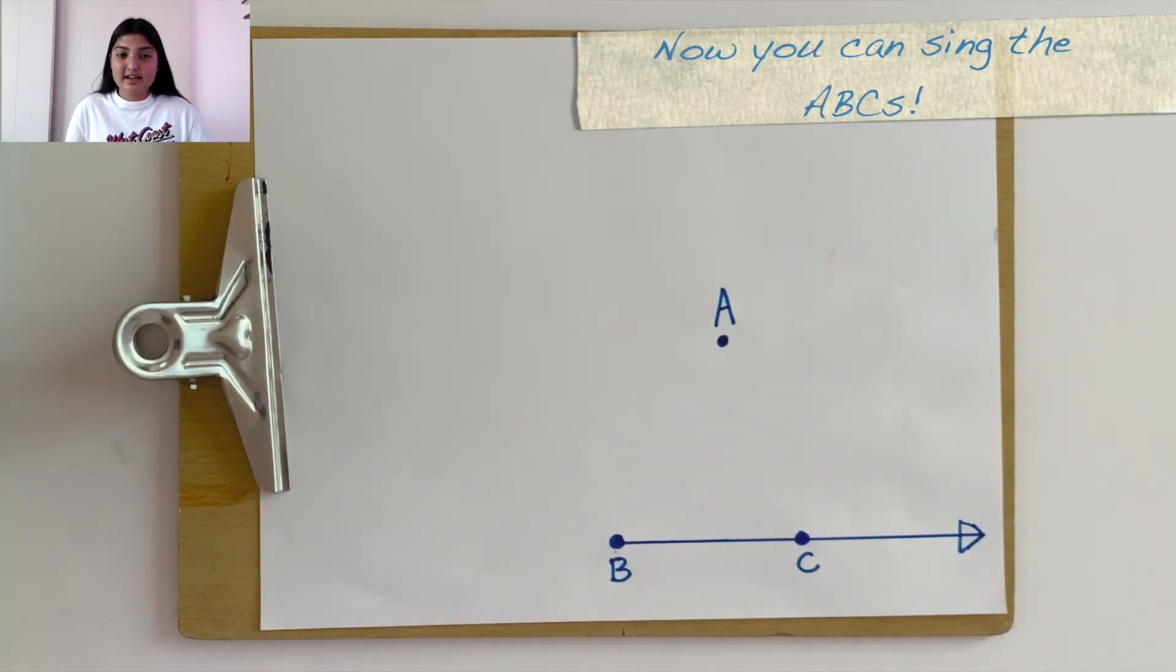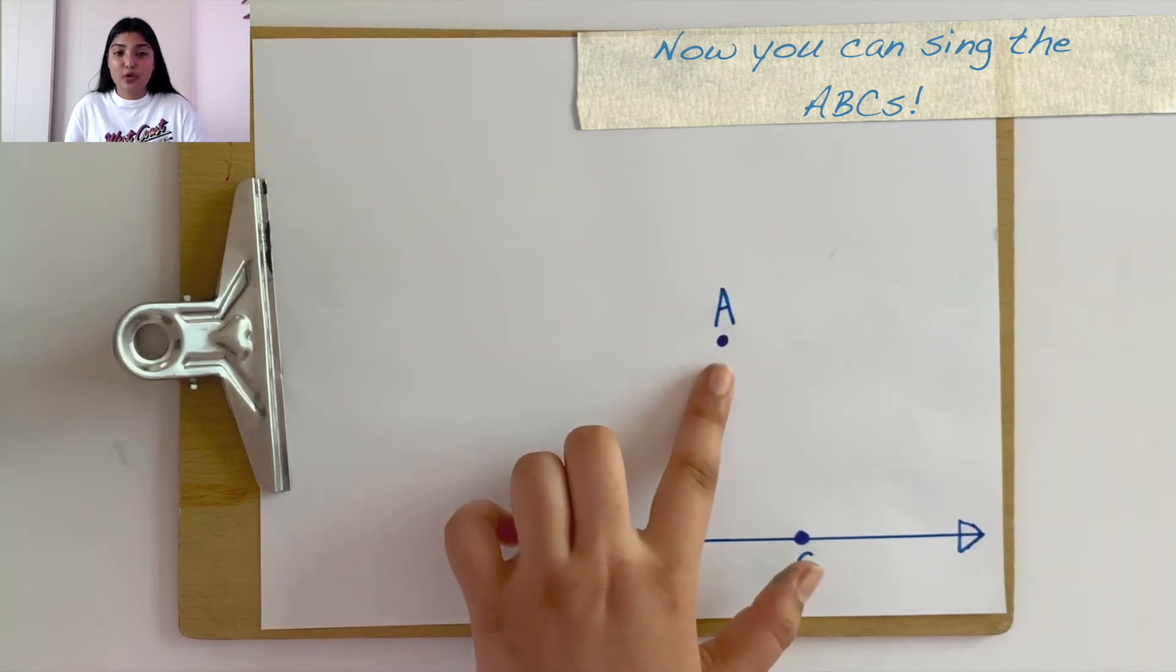Let's label this point A. Finally, we can make another line from point B going past point A.